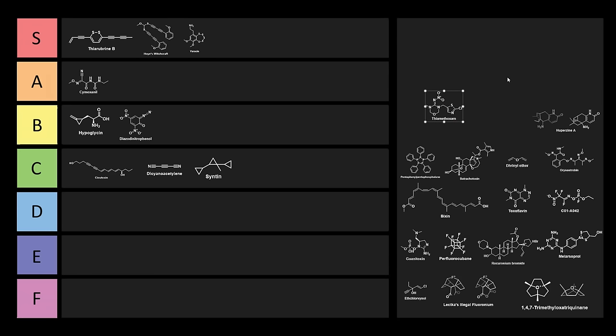Next, we have thiamethoxam. This is a really cursed-looking one. This is a systemic neonicotinoid insecticide, and this works as a nicotinic acetylcholine receptor inhibitor. Here we have this weird six-membered ring with two nitrogens and one oxygen. We also have this chlorothiazole ring. Then we have this interesting N-nitroimine.